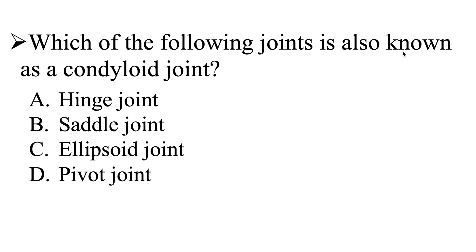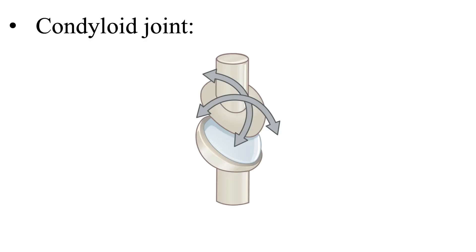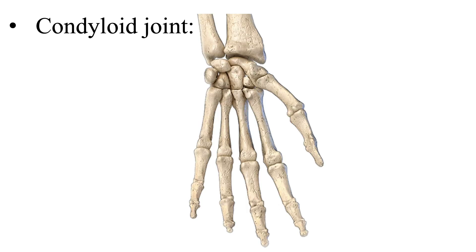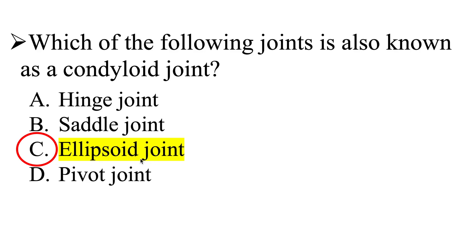So let's look at this question again: which of the following joints is also known as a condyloid joint? The condyloid joint has an oval-shaped surface where one end of a bone fits within the ellipsoidal socket or cavity of another. This is also known as an ellipsoidal joint, allowing for flexion, extension, abduction, and adduction. An example is the radial carpal joint. The correct answer is C, ellipsoidal joint.